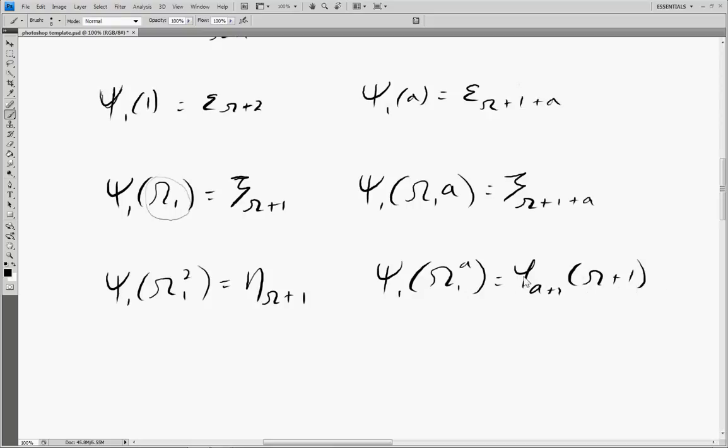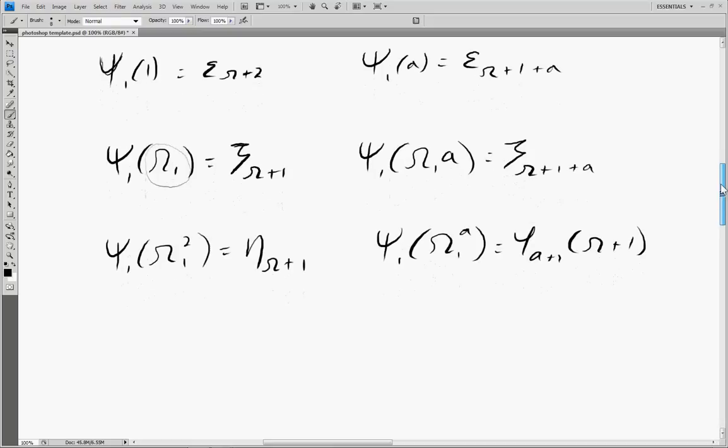So basically we're hitting all the same points we did before. This function gets stuck in every point that it did before, except now we're constructing omegas here. That's the only difference.